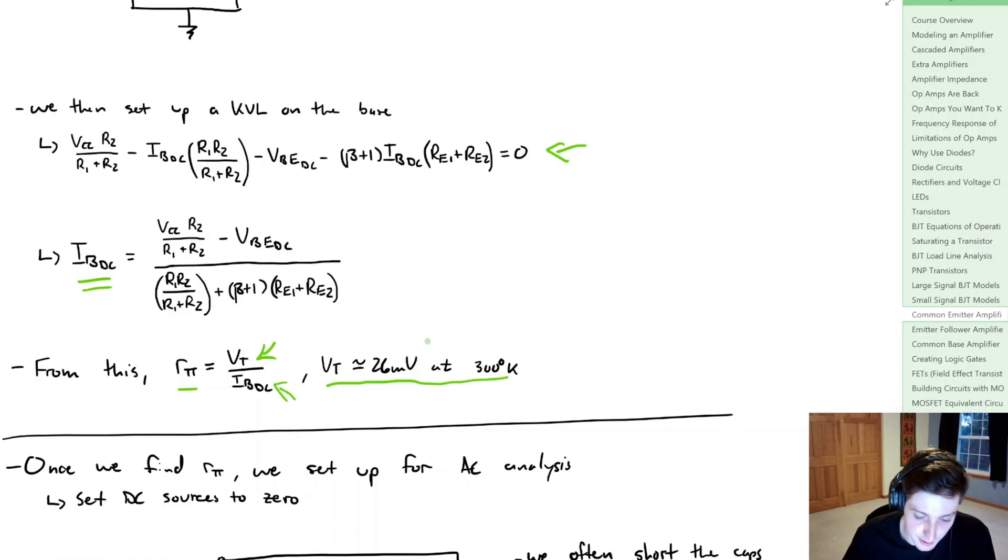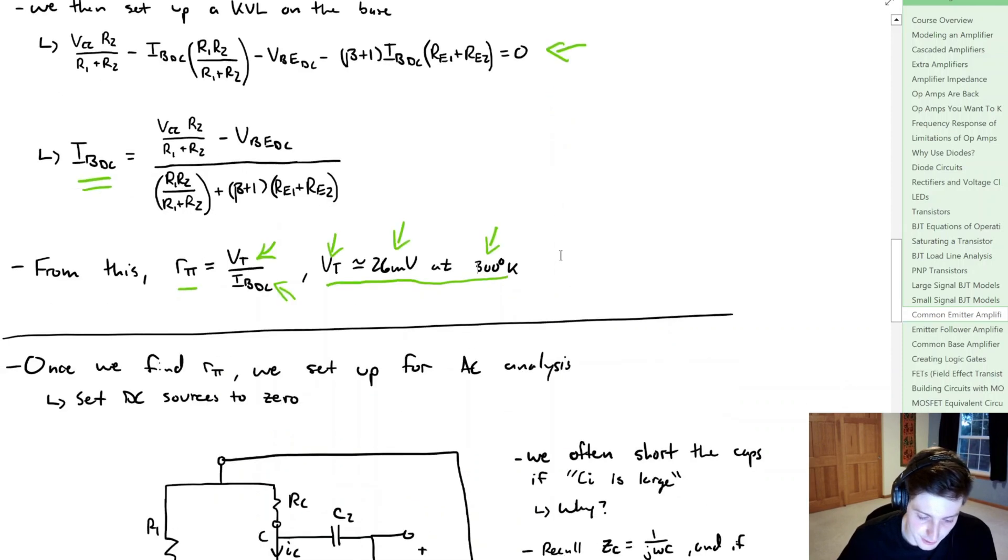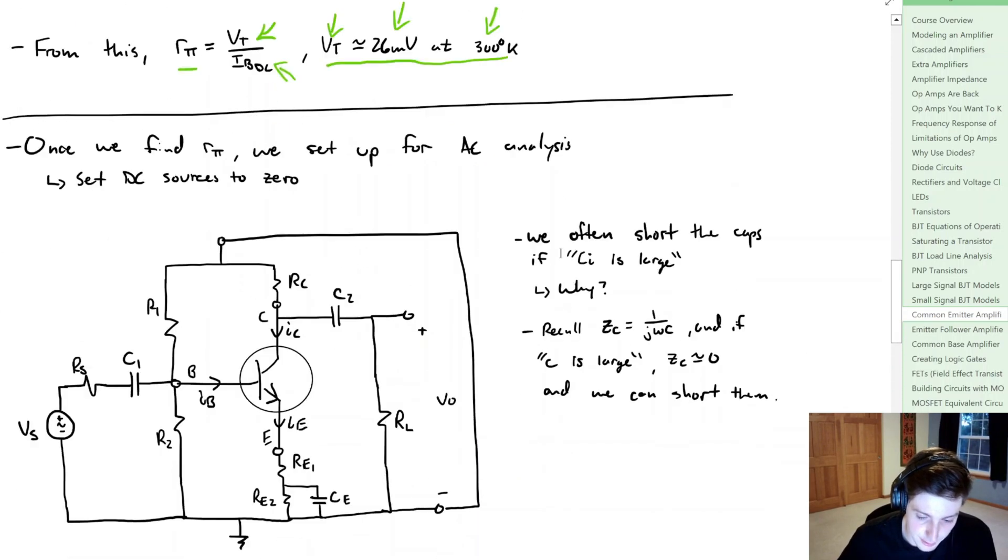Now for the millionth time in this course, VT is your thermal voltage, which is 26 millivolts. Of course that's at 300 degrees Kelvin. So now that we've found what Rpi is, we can set up for AC analysis.